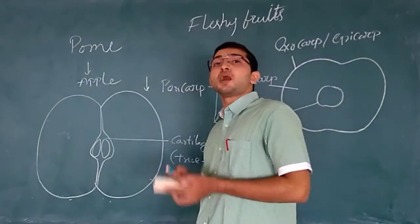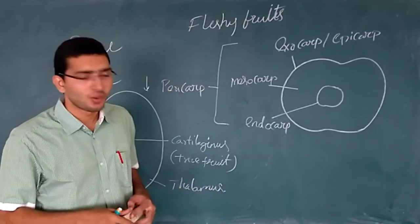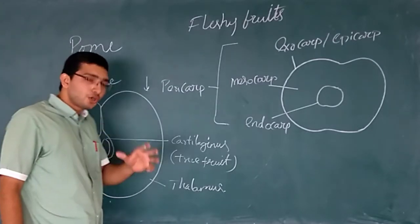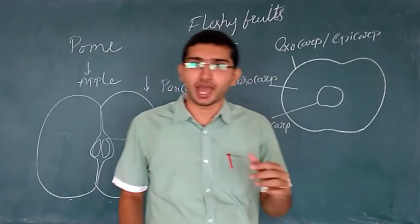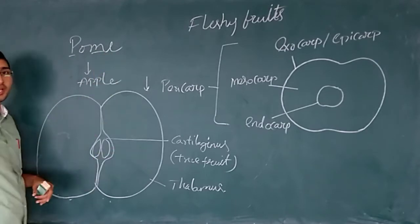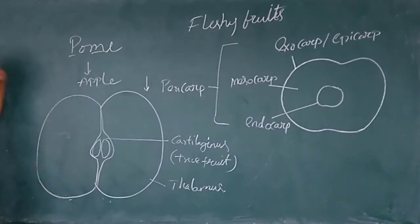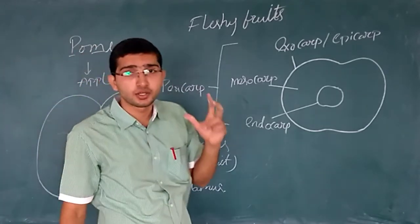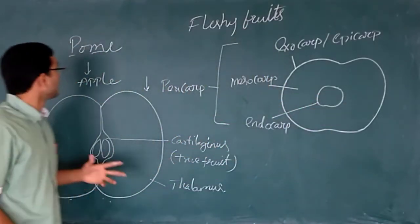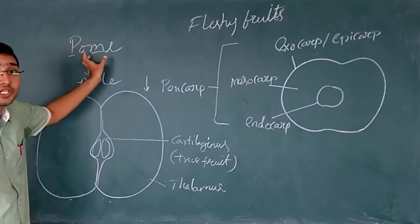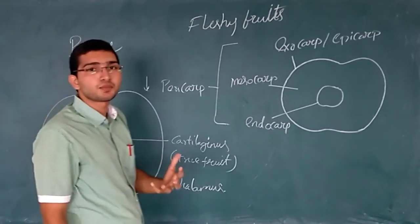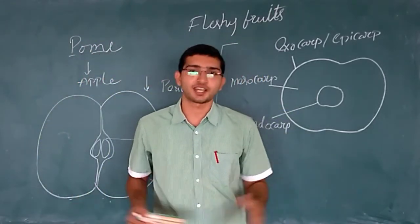In the pome, the ovary is inferior. The inner cartilaginous core is the true fruit, and the outermost fleshy layer is the modified thalamus — which is very tasty. To remember the scientific name of apple, the word 'pome' is a helpful trick: 'M' stands for Malus and 'P' stands for Pyrus — so the scientific name includes Malus. This is the complete overview of the five types of fleshy fruits. Thank you for watching.